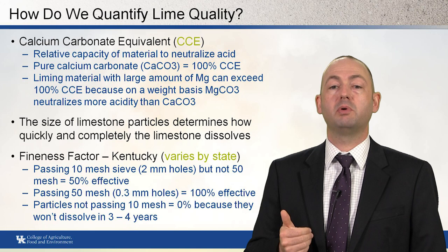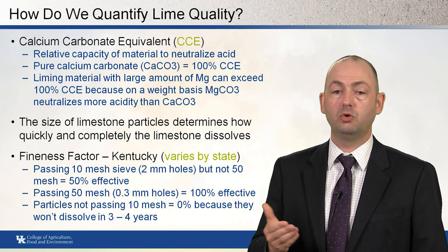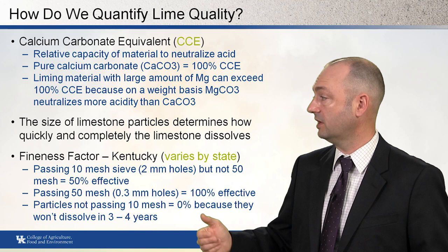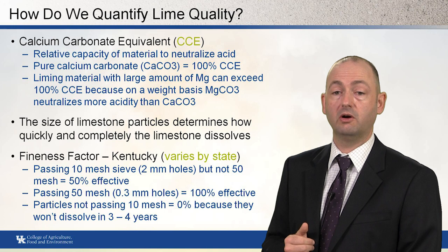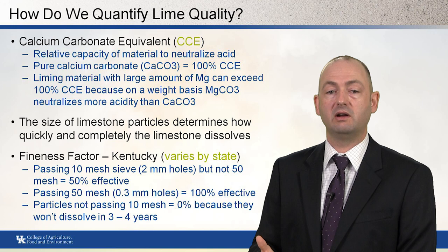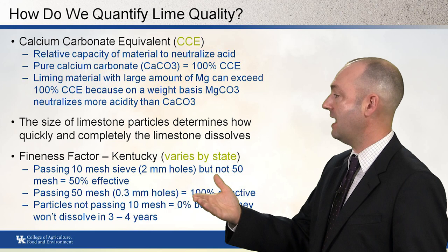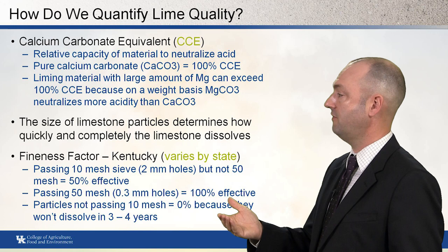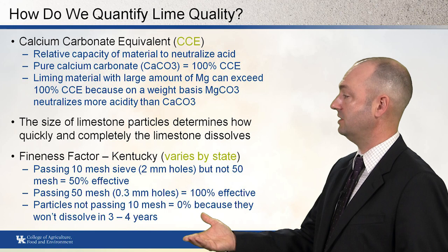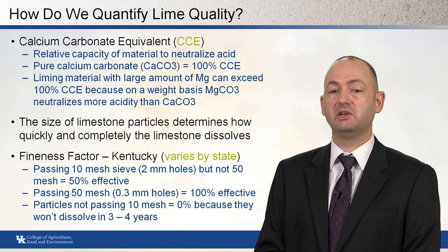The size of limestone particles determines how quickly and completely the limestone dissolves. In Kentucky, we use a fineness factor. As an example, lime passing through a 10-mesh sieve (2 mm hole) but not passing the 50-mesh sieve is considered 50% effective. The coarser material is not 100% effective. Material passing the 50-mesh sieve (0.3 mm hole) is 100% effective because it will likely dissolve in the first year. Particles remaining on top of the 10-mesh sieve are attributed 0% effectiveness because they won't dissolve in three to four years.